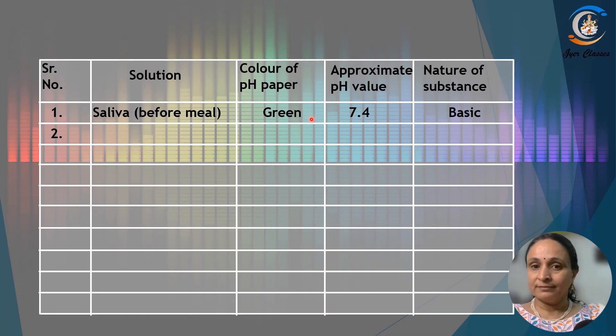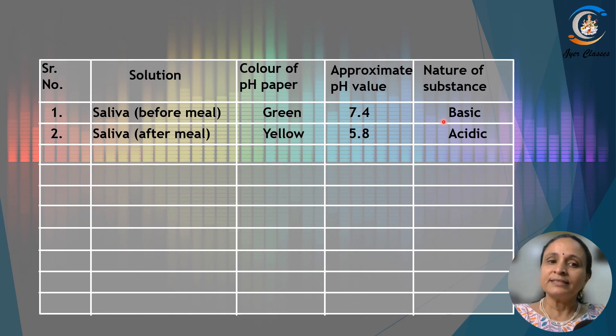Saliva before the meal, the pH paper is turning green. The approximate value of the pH is 7.4, so it is indicating that the saliva is basic. But after the meal it turns yellow and the pH value is approximately 5.8, showing it is acidic.